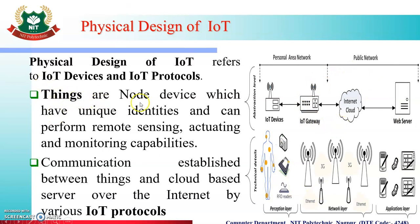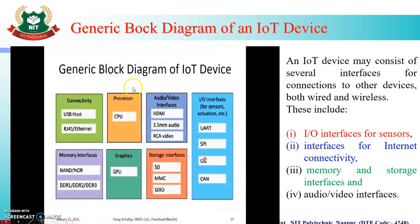What are Things? Things are the node devices which have unique identities and perform remote sensing, actuating, and monitoring capabilities. IoT Protocols are used to communicate between the Things and cloud-based servers with the help of the Internet.